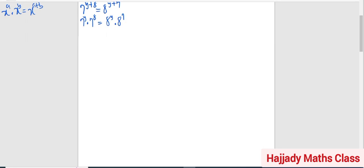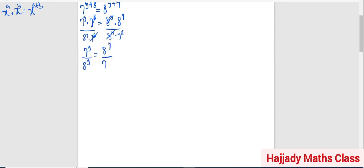So with this, we can divide both sides by 8 raised to the power y times 7 raised to the power 8. So we divide both sides by that. With this, 7 raised to the power 8 is going to cancel out 7 raised to the power 8, and 8 raised to the power y is going to cancel out 8 raised to the power y. So I'm going to be left with 7 raised to the power y divided by 8 raised to the power y, equal 8 raised to the power 7 divided by 7 raised to the power 8.